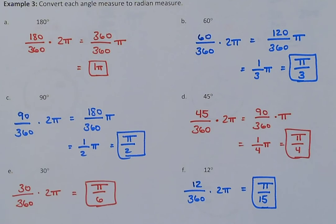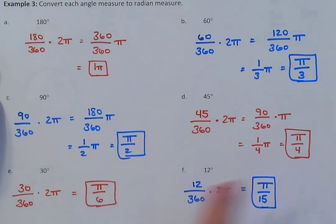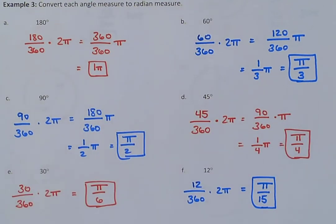Radians will come more into play in algebra 2, especially with the unit circle. When you get to the unit circle — where we talked about special right triangles, sine, cosine, and tangent of 30, 60, and 45 degrees — you'll also see radian measures. So π, π/3, π/2, π/4, and π/6 are going to be extremely common radian measures you'll see in algebra 2. To convert: take degree/360 × 2π, multiply the 2 in, simplify the fraction, and apply π.